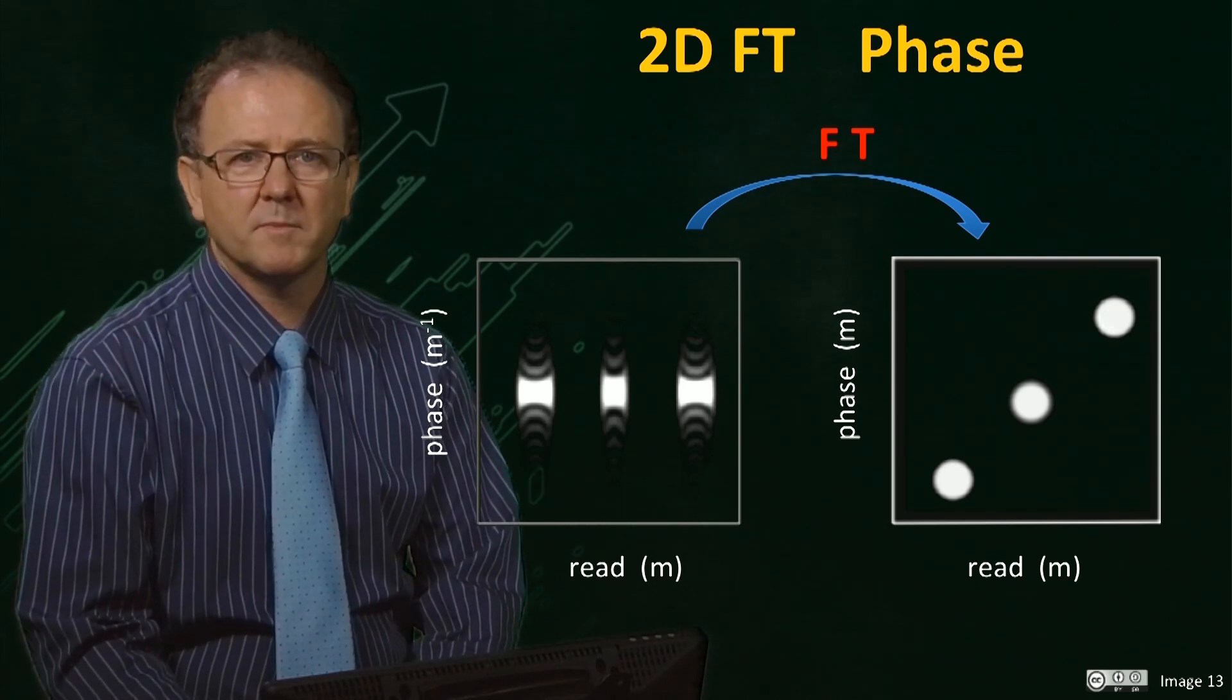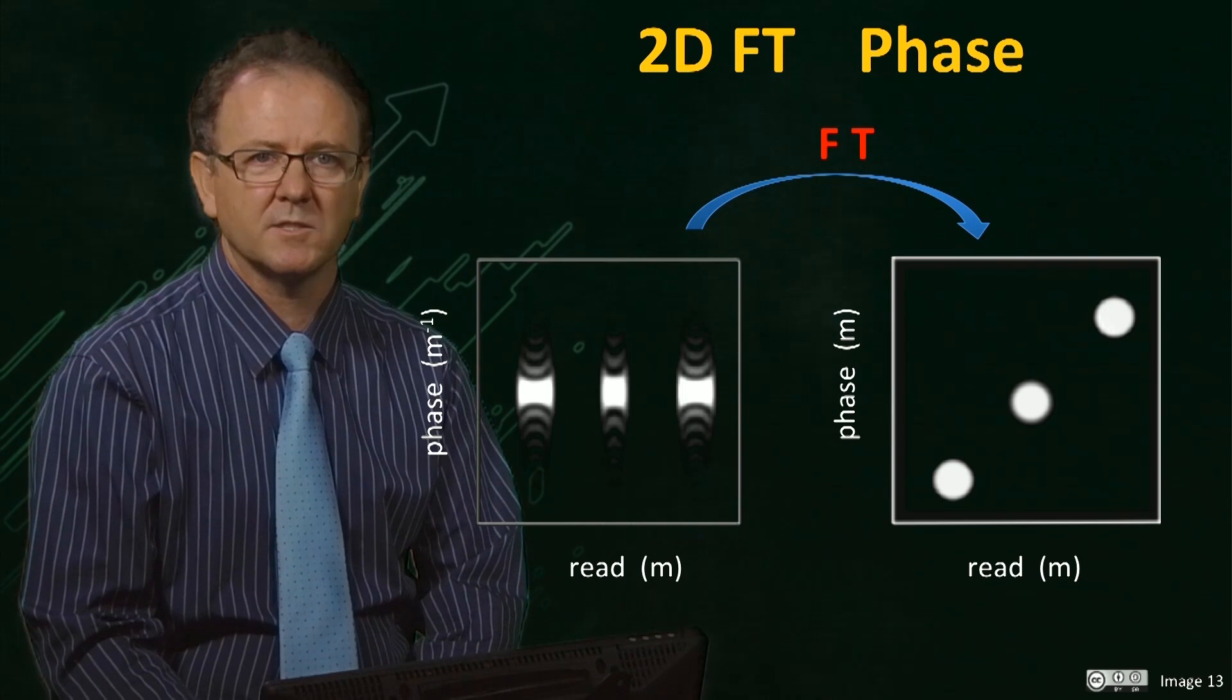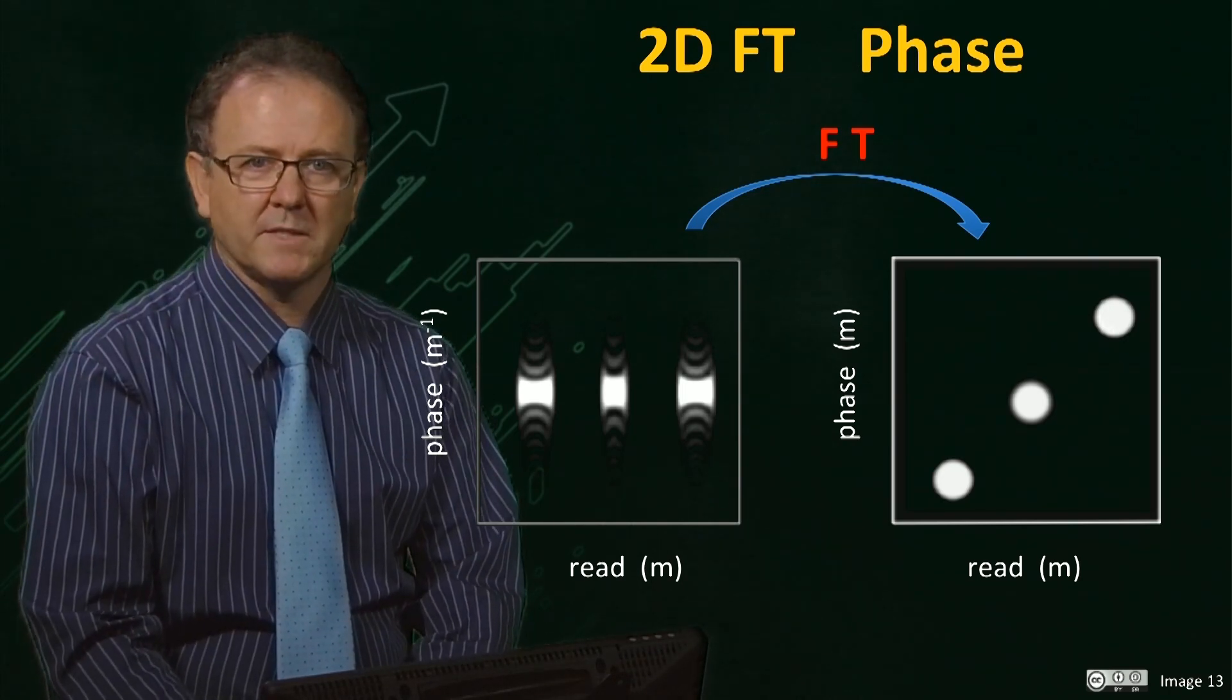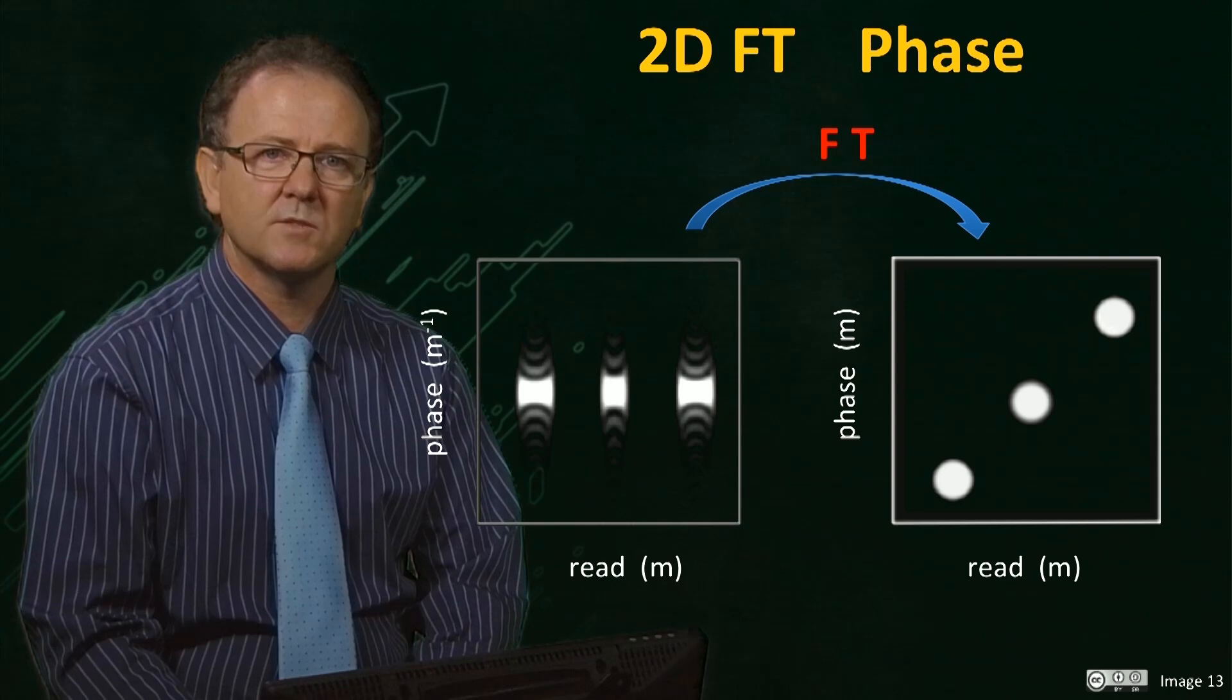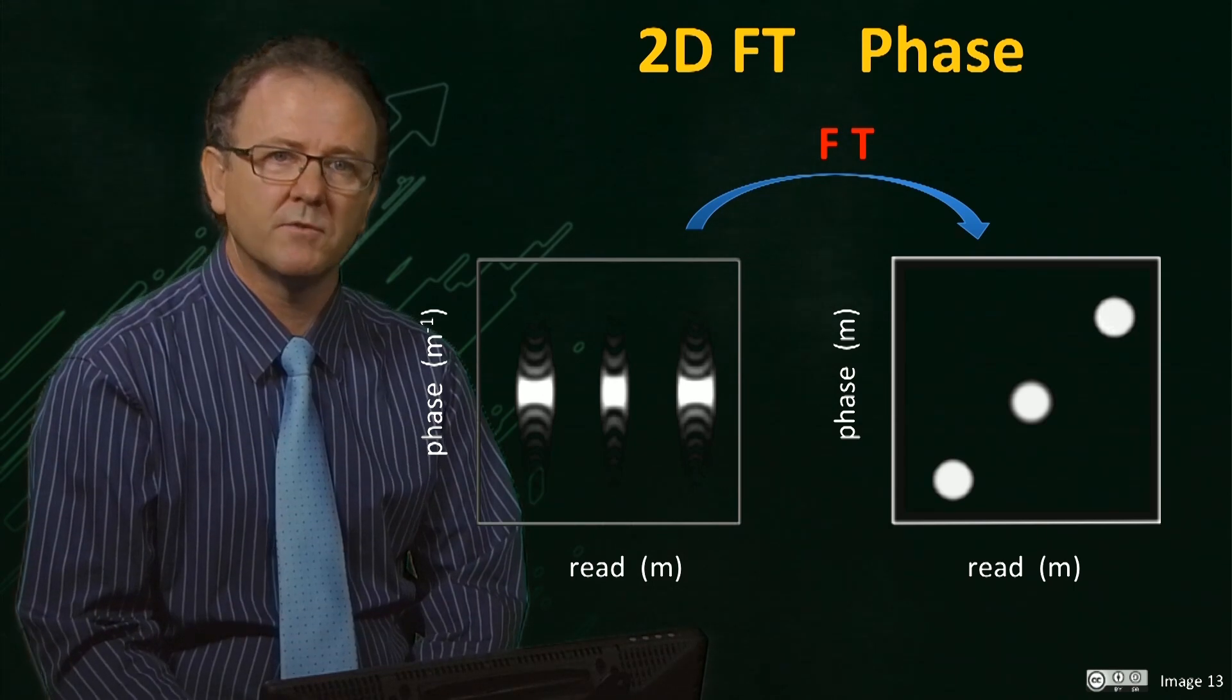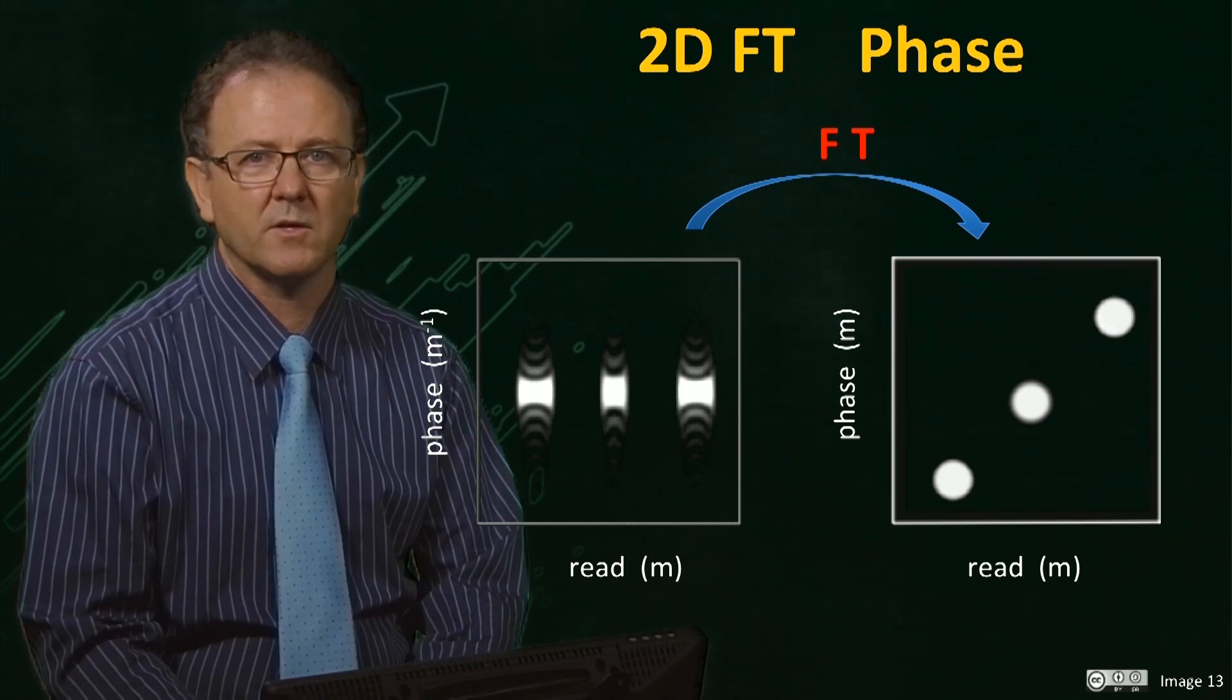We have mapped the position and spin density of the water molecules by spatially encoding their signals using field gradients and a spin echo RF pulse sequence. This concludes the section on basic principles of spatial encoding and image formation. In the next section, we will see how the relaxation properties of the water protons can be exploited to vary the contrast in the image between different types of tissue, providing the wonderful anatomical detail available to us in MRI scans.